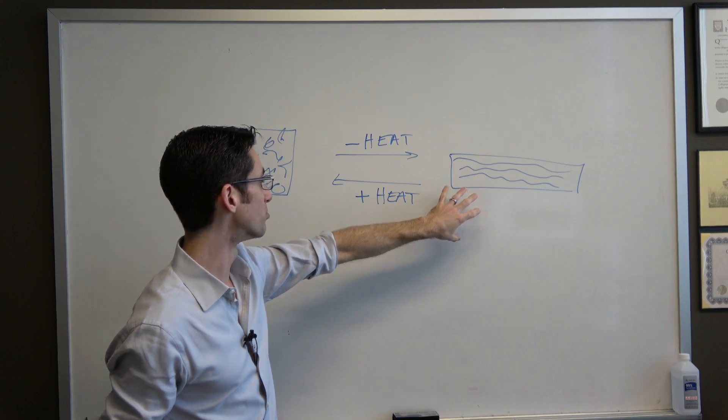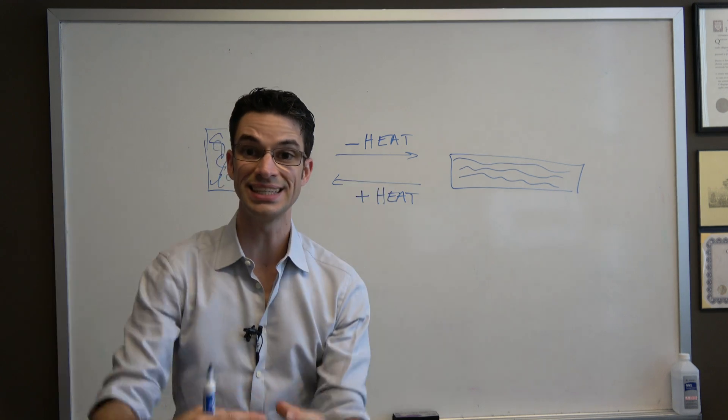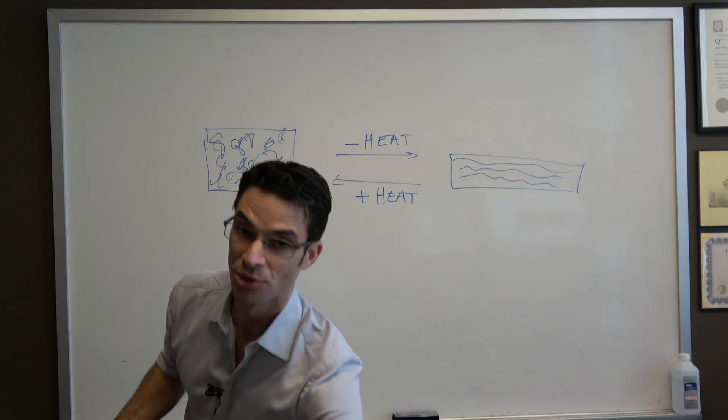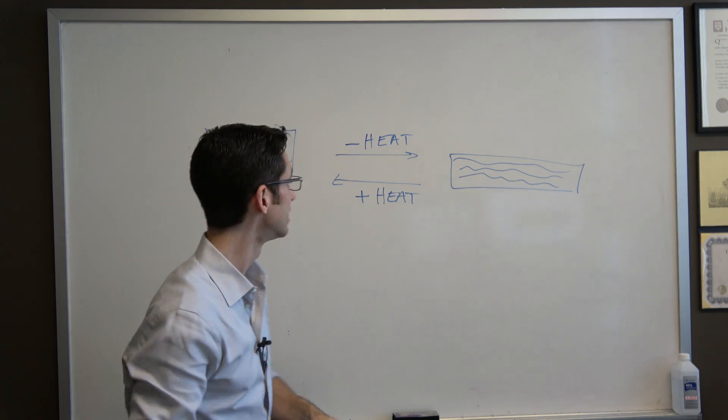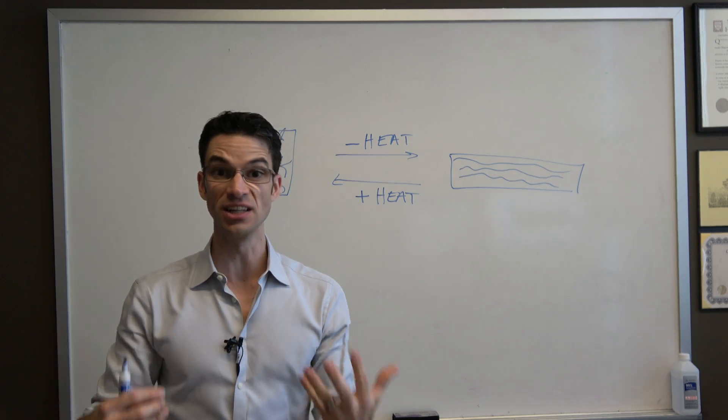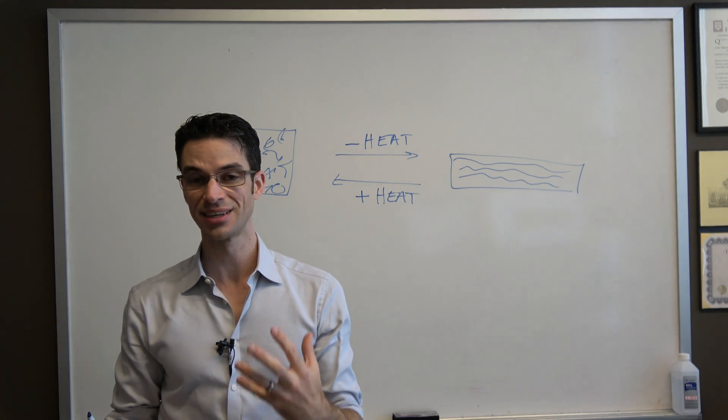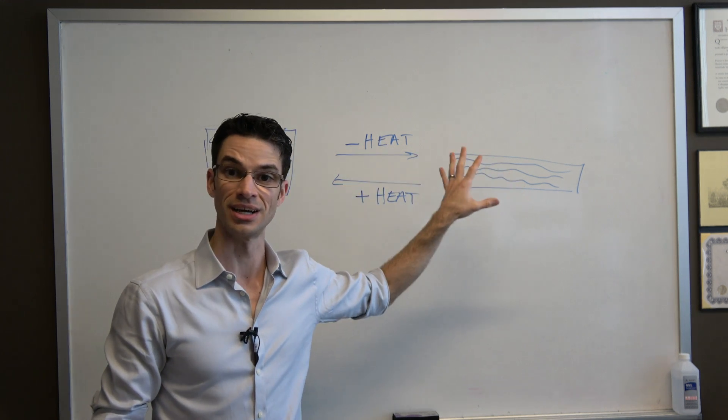The converse is also true. If you compress it, you take heat from the environment that goes into the polymer, so into the rubber band. Heat just from the environment goes into the rubber band and it feels cold. Heat is going in, that's what makes it feel cold because heat is going in to affect this conformational change.